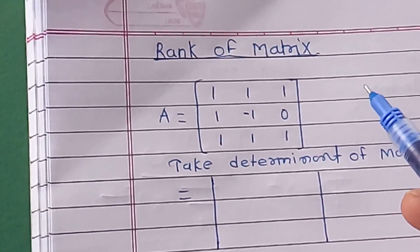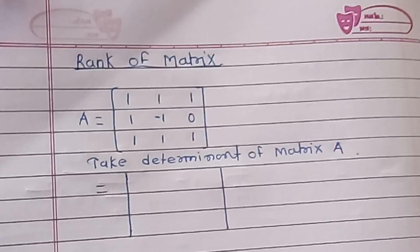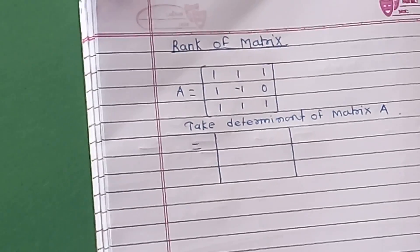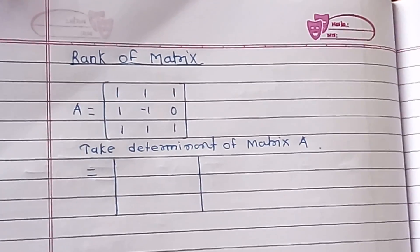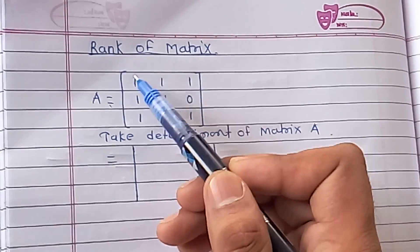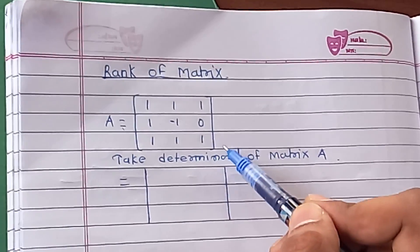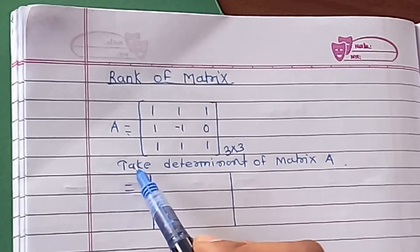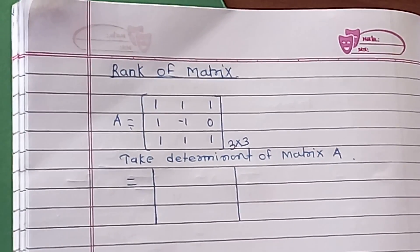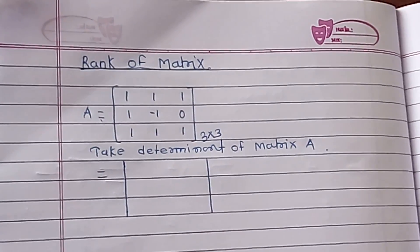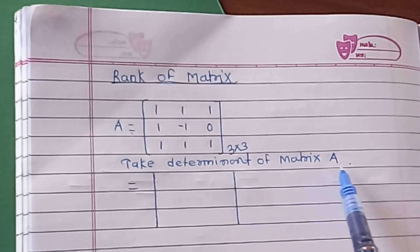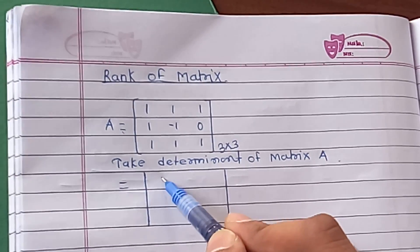This is a question regarding the rank of a matrix. This type of question is asked in the GATE exam for one mark. Consider the matrix A — a three by three matrix with three rows and three columns. For finding the rank of the matrix, the simplest method is to first take the determinant of matrix A.